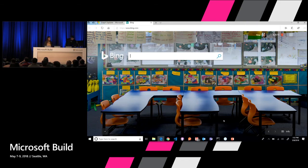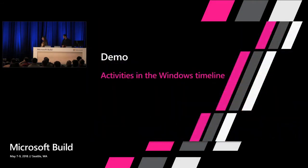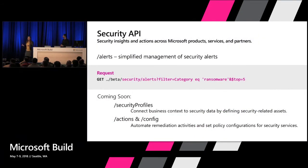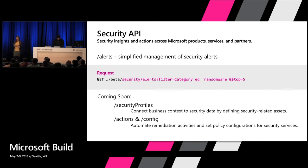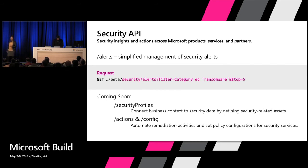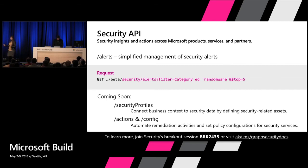The final API highlight is the Security APIs. This is a preview released a couple of weeks ago — being able to get alerts from the different security services at Microsoft and from partners that participate in the ecosystem. The first set of APIs in the security API set is alerts, with more coming soon around security profiles, actions, and configuration. The breakout session for the security team is actually going on at the same time, so you'll have to catch the recording afterwards.